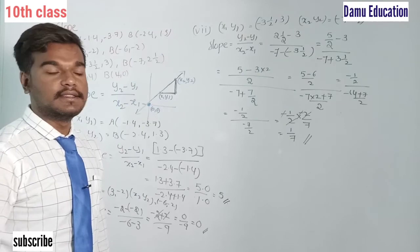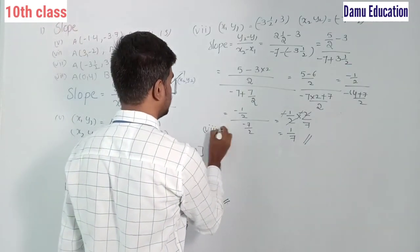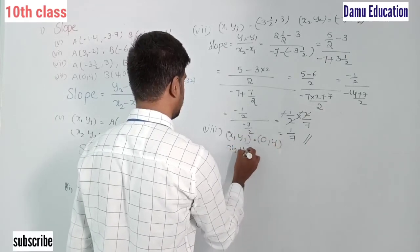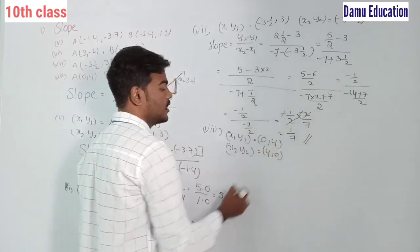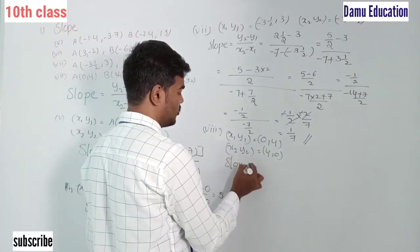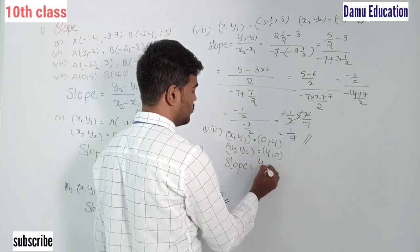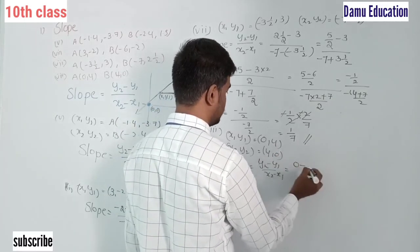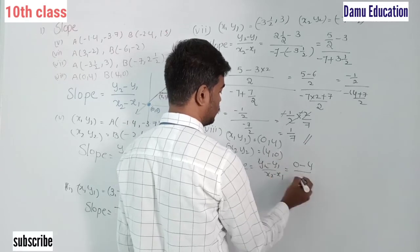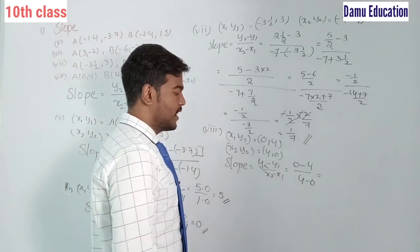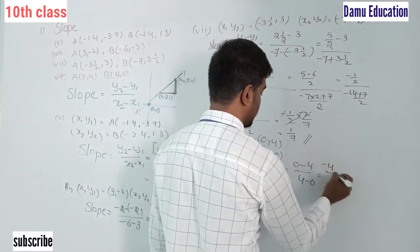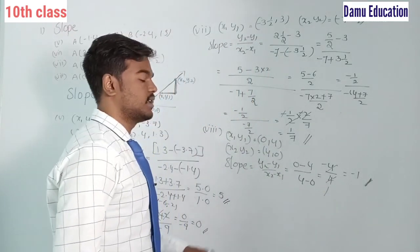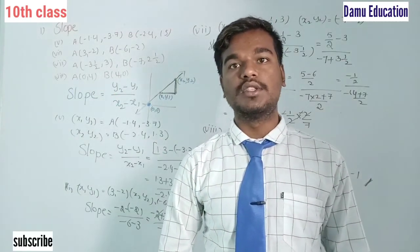For the eighth and final example, x1, y1 = (0, 4) and x2, y2 = (4, 0). Slope = (y2 - y1) / (x2 - x1) = (0 - 4) / (4 - 0) = -4/4 = -1. So the slope for the eighth example is -1. Thanks for watching, please subscribe.